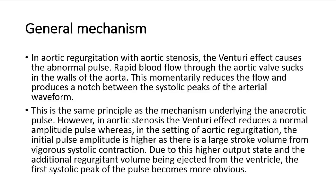In aortic regurgitation with aortic stenosis, the venturi effect causes the abnormal pulse. Rapid blood flow through the aortic valve sucks in the walls of the aorta, momentarily reducing the flow, and producing a notch between the systolic peaks of the arterial waveform. This is the same principle underlying the anacrotic pulse. However, in aortic stenosis, the venturi effect reduces a normal amplitude pulse, whereas in the setting of aortic regurgitation, the initial pulse amplitude is higher, as there is a large stroke volume from vigorous systolic contraction. Due to this higher output state and the additional regurgitant volume being ejected from the ventricle, the first systolic peak of the pulse becomes more obvious.